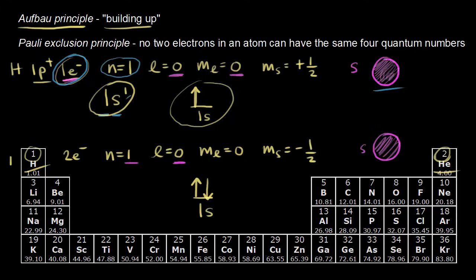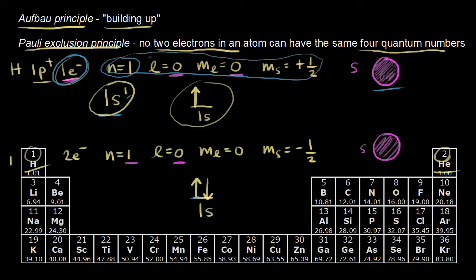The reason we have to pair the spins is because of the Pauli exclusion principle, which says no two electrons in an atom can have the same four quantum numbers. The first electron in the 1s orbital has n=1, l=0, ml=0, and ms = +1/2. The second electron must have n=1, l=0, ml=0 — those three are the same — but ms = −1/2, spin down. So the two electrons differ by the last quantum number. As a consequence, an orbital can contain a maximum of two electrons, because you've exhausted all possible combinations of quantum numbers.